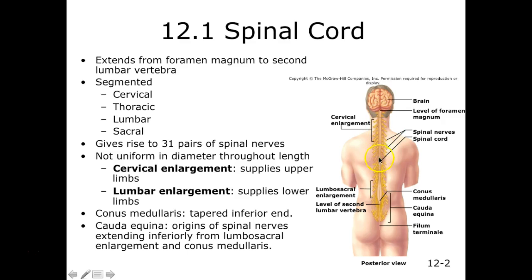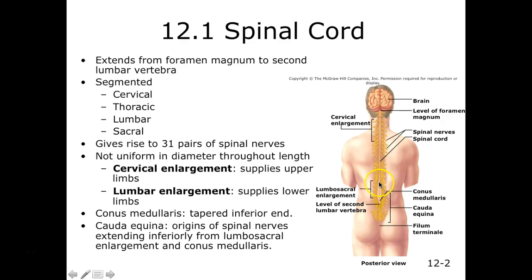Although the entire spinal cord is not one long column, it actually has two major enlargements. We have a cervical enlargement because we have more cell bodies in this region for the neurons that go and supply the upper limbs. We also have a lumbar enlargement because it has to give supply to our lower limbs.